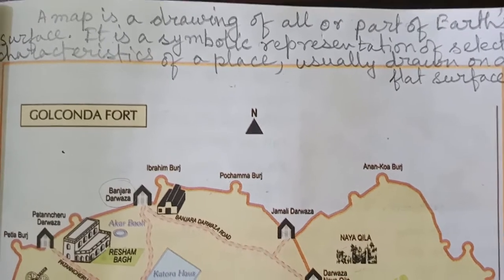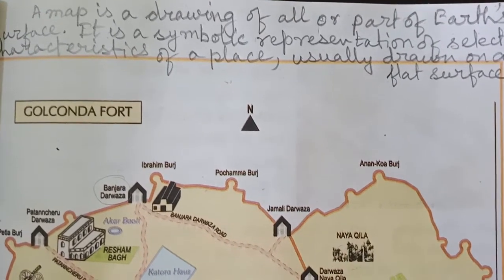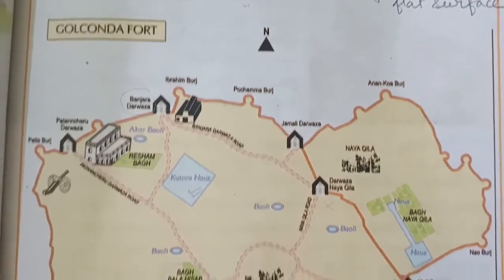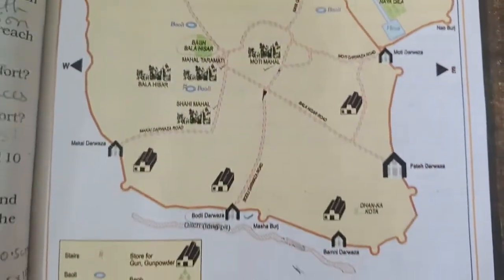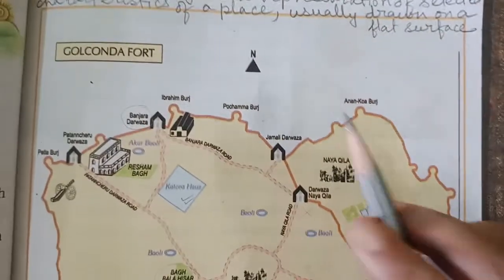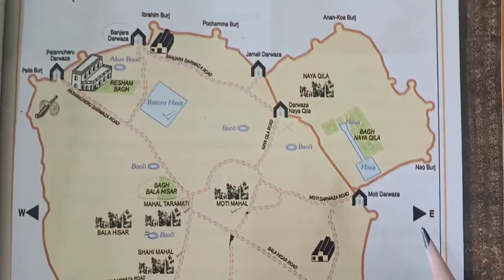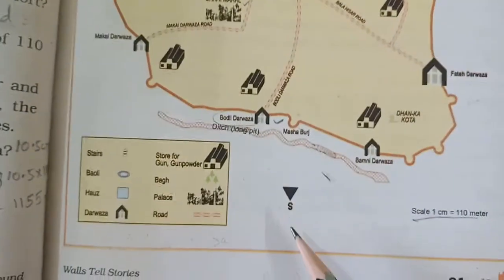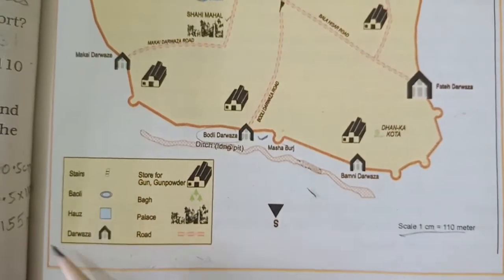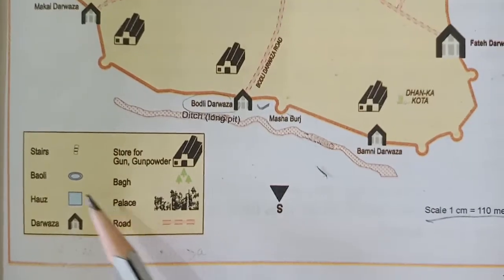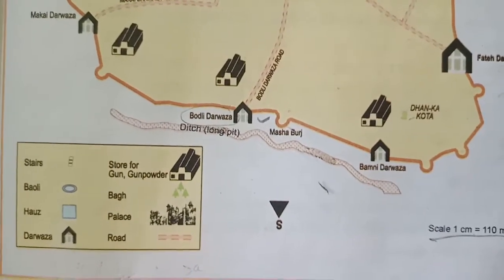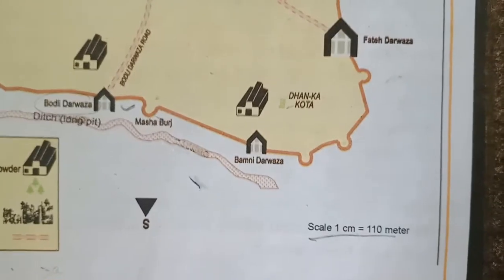There are different types of maps like physical map, political map, thematic map, etc. Here, the map given is the Golconda Fort map. You can see the directions are given — north, east, west, and south. The things depicted in the map are also mentioned, like stairs, bauli, house, and darwaza. This is the scale of the map.